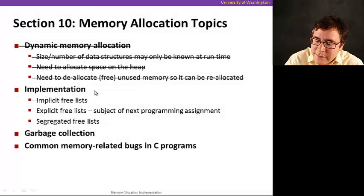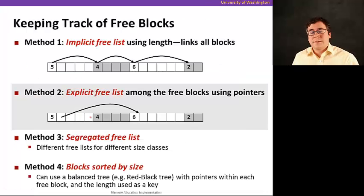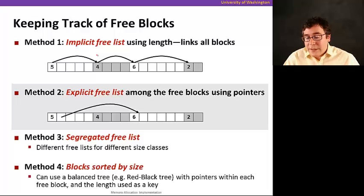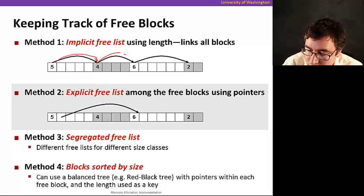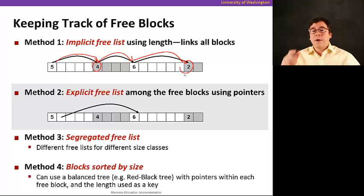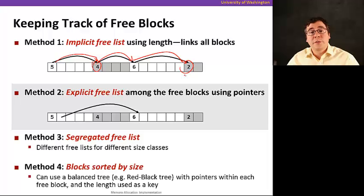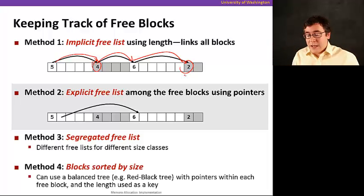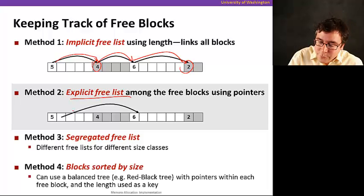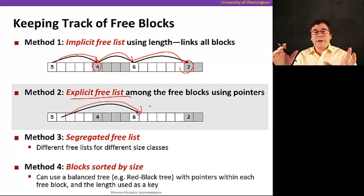Now that we know how implicit free lists work, let's look at explicit free lists. With an implicit free list, we called it implicit because we could traverse the entire heap and knew implicitly, based on a bit, whether a block is free or not. We had to traverse it to figure it out. With the explicit free list, we're going to link free blocks together explicitly.